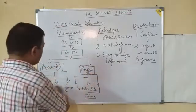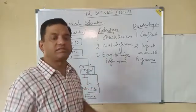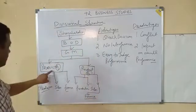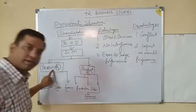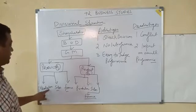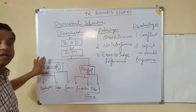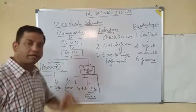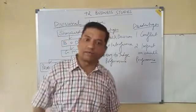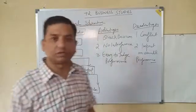Under Product A and Product B departments, a similar procedure will be followed as in the case of functional structure. For example, Product A department is subdivided into production department, sales department, and finance department — with different types of sub-activities relating to production, sale, marketing, finance, personnel, and stores.